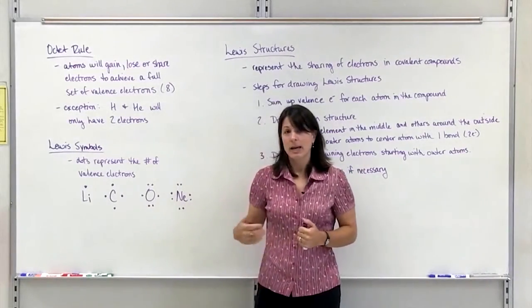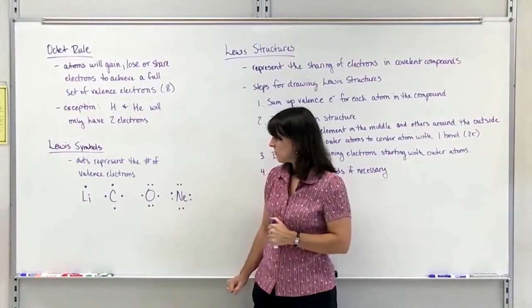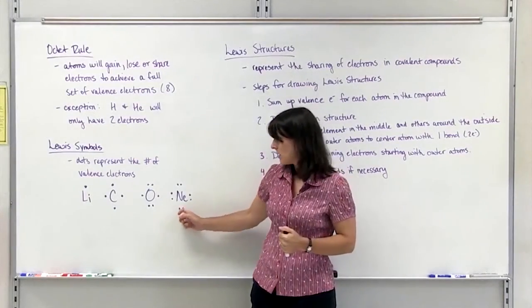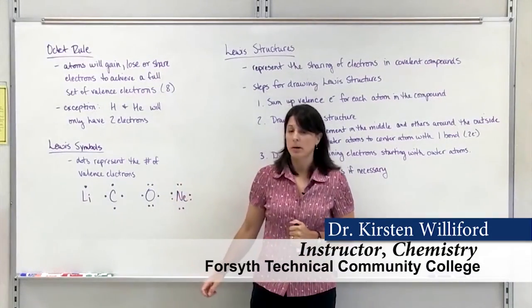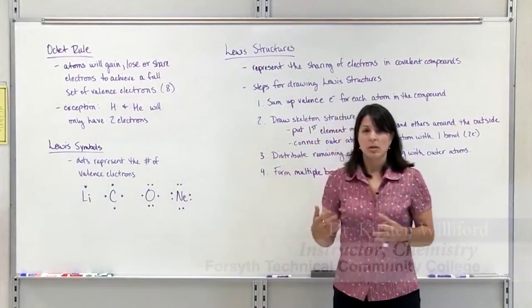Oxygen is in group 6A, has 6 valence electrons, so we have 6 dots around the symbol for oxygen. And neon is a noble gas. It has 8 valence electrons, so we have 8 dots around it. Those are the Lewis symbols for just elements.